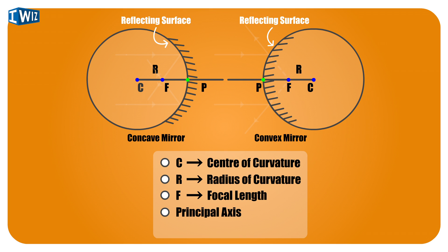The point where the principal axis meets the lens is known as the pole. There are four new terms that we have learned today: the center of curvature, the radius of curvature, the focal point of the lens, and the pole. We are going to be using this terminology from your textbook in the coming videos, so please make sure you familiarize yourself with it.